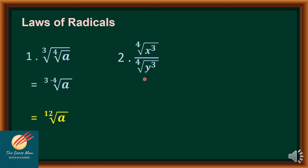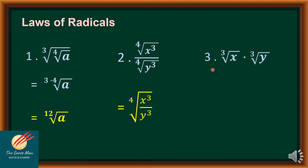Number two: the fourth root of x cubed divided by the fourth root of y cubed. Since the index is the same, I can rewrite this as the fourth root of x cubed divided by y cubed. Number three: the cube root of x times the cube root of y. Since the index is 3, I can write this as the cube root of x times y.